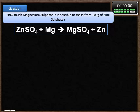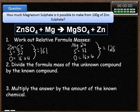Okay, here's another question for you to have a go at. How much magnesium sulfate is it possible to make from 100 grams of zinc sulfate? Pause the video and give the question a go.